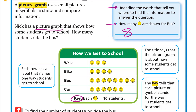There is a really important thing here which is the key. The key is like a key that unlocks a lock, or it's like a clue. The key says that each symbol means or equals ten students. So for students who go to school walking, we don't count one, two, three — we count each symbol as ten. So we count by tens: ten, twenty, thirty. Students who walk are thirty.